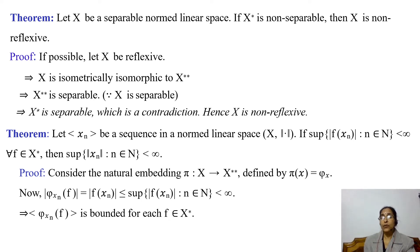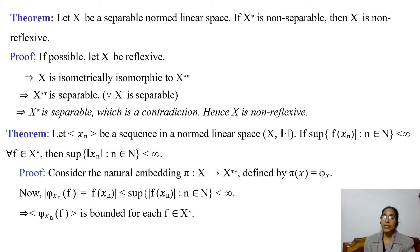Consider the natural embedding π from x to x** defined by π(x) = φₓ. Now |φ_{xₙ}(f)| by definition equals |f(xₙ)|, which is less than or equal to the supremum of |f(xₙ)| over all n in ℕ, and this supremum is given as finite. So |φ_{xₙ}(f)| is less than infinity for every f in x*, for all n in ℕ. Thus the sequence φ_{xₙ}(f) is bounded for each f in x*.